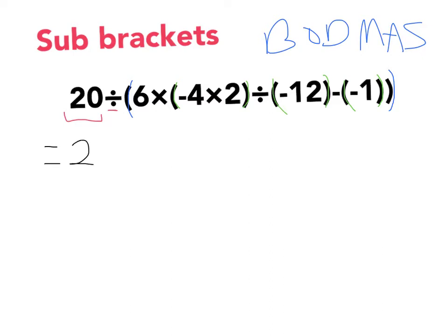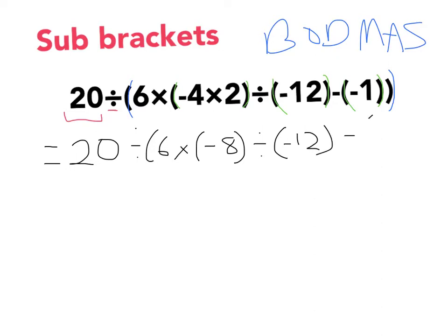So my next line will be equals 20 divided by brackets six times... I'm going to start here because this is my first sub-bracket as I've moved left to right. So negative four times two is negative eight. I keep it, then I divide by negative 12 minus negative one, brackets brackets again.